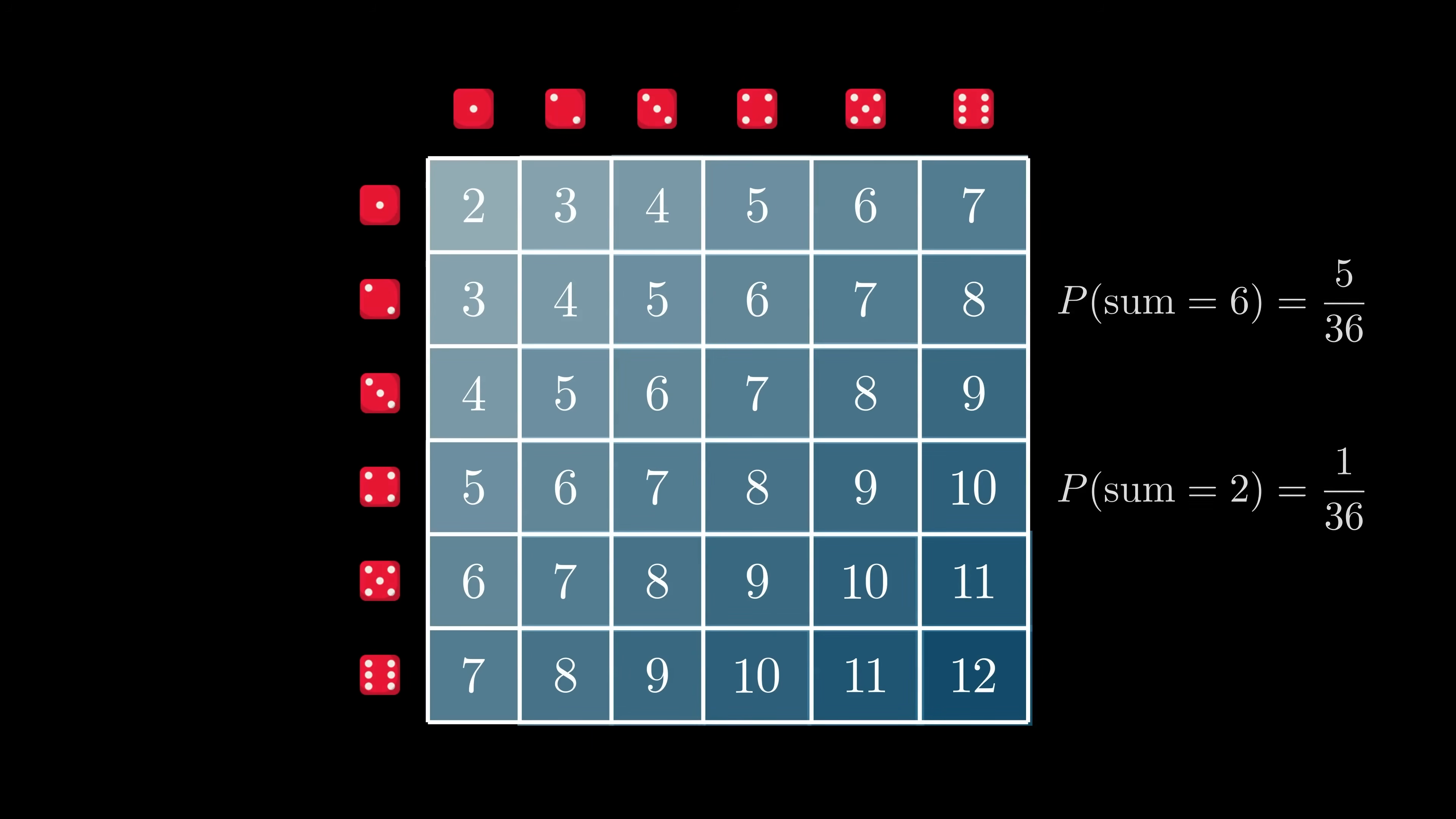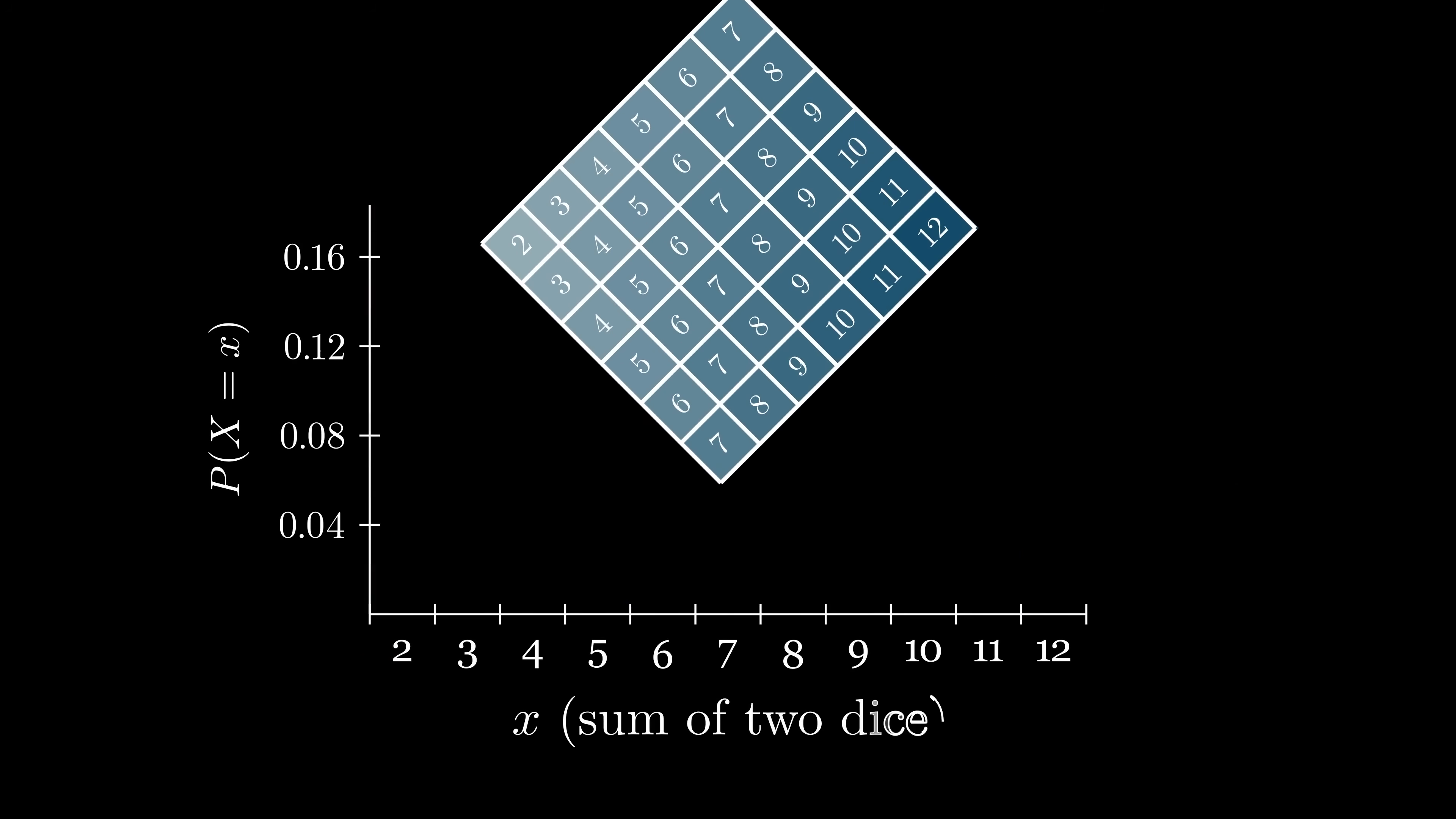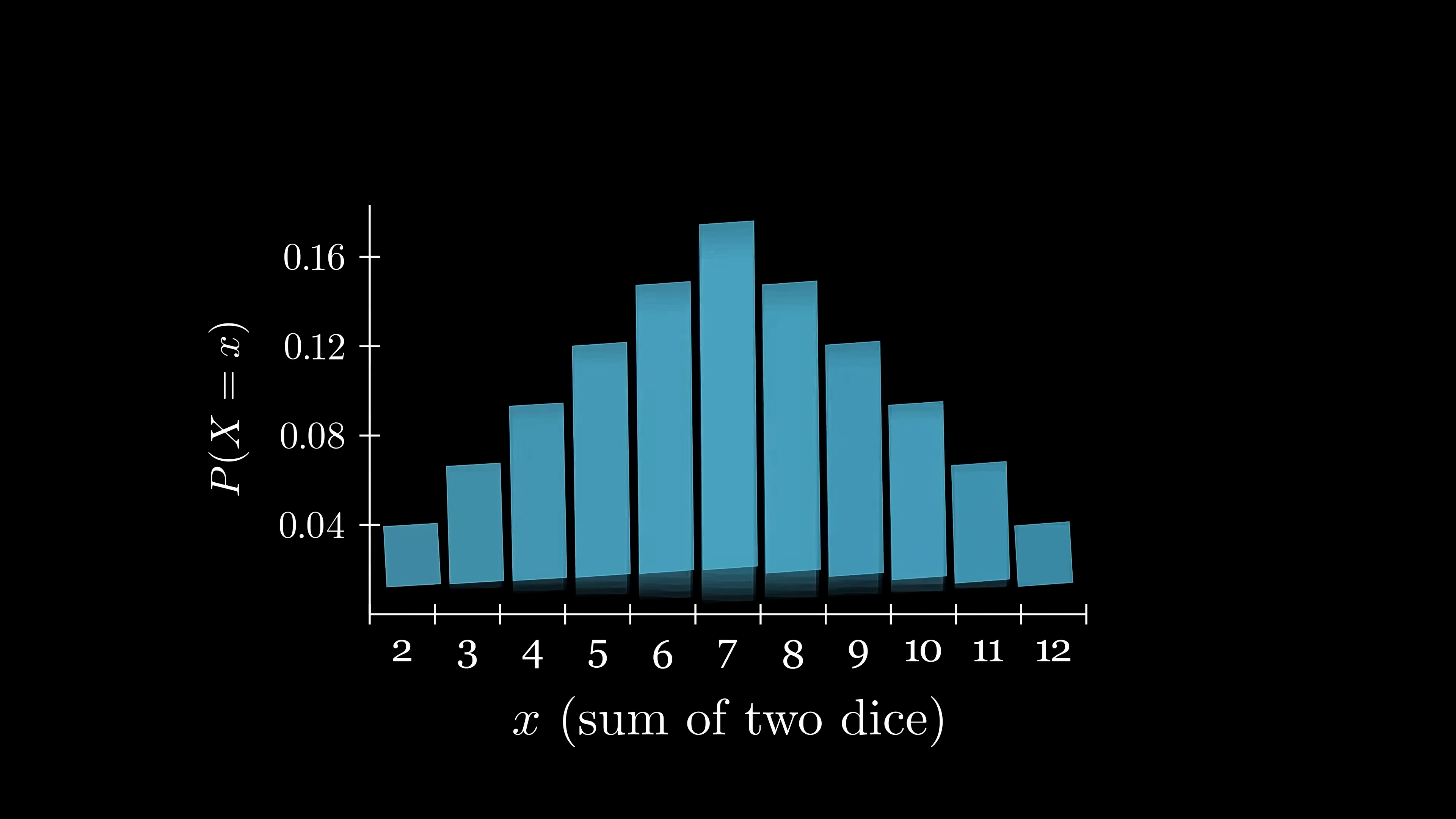Just like before, we can visualize the probability mass function as a plot, with the sum on the x-axis, and the probability on the y-axis. Notice how the bar at x equals 6 has a height of 5 36ths, the probability of getting a sum of 6.